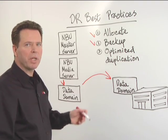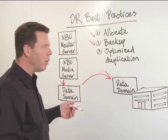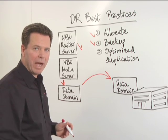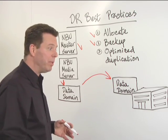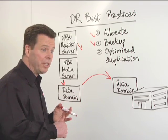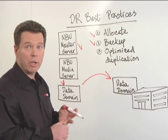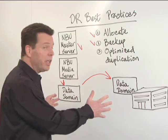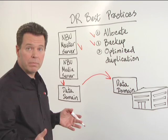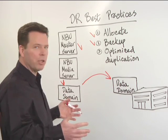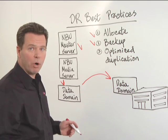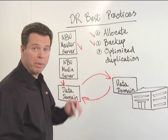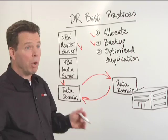Optimized duplication occurs under the direct control of NetBackup. The duplicate is cataloged by NetBackup, and NetBackup can be used to monitor optimized duplication progress and also report on optimized duplication. This is collectively known as open storage.